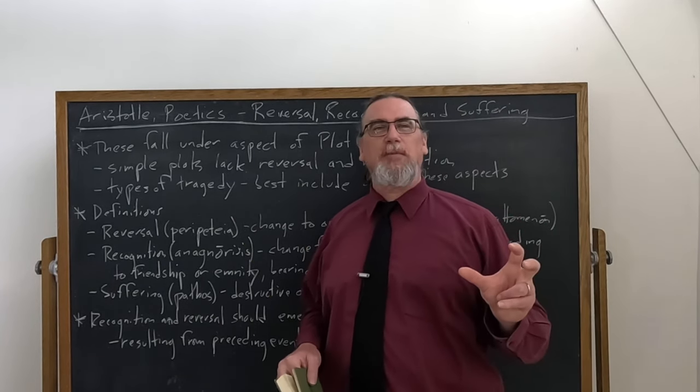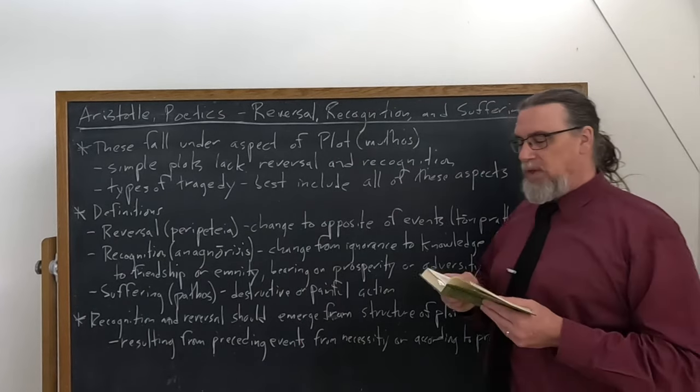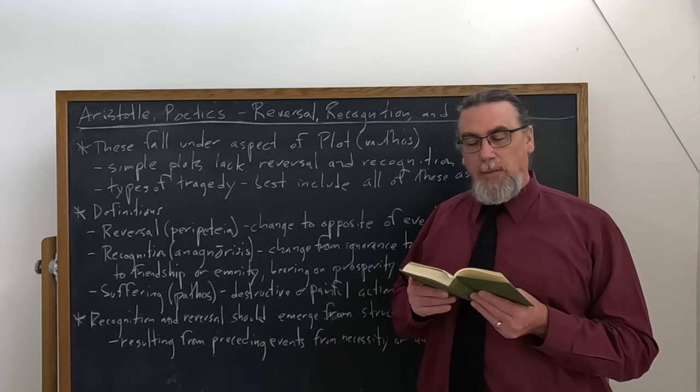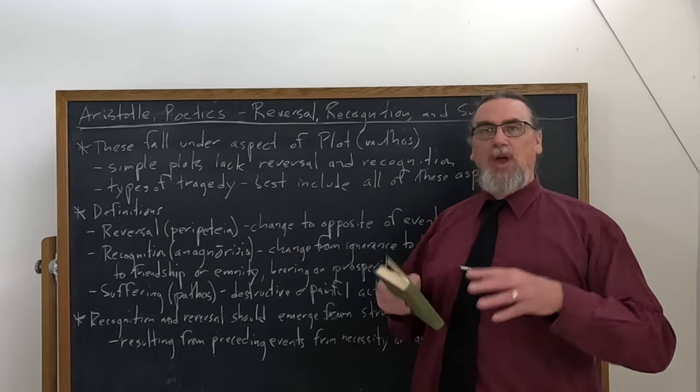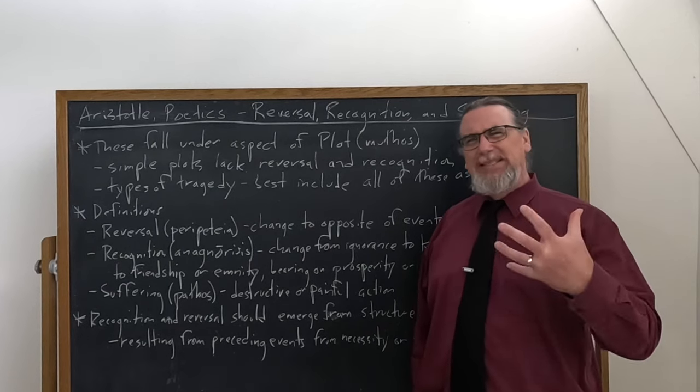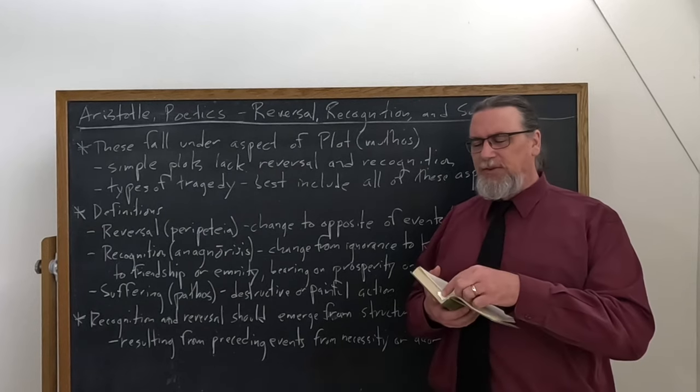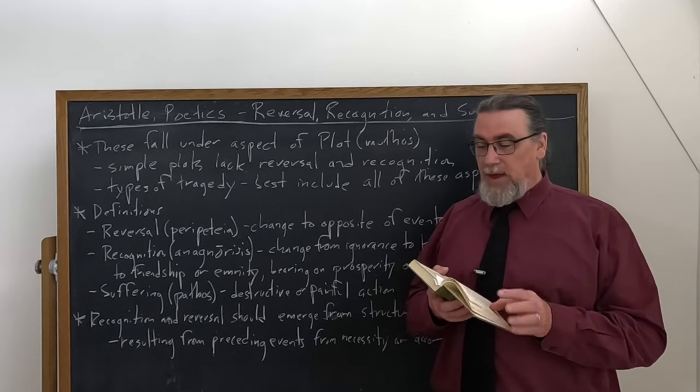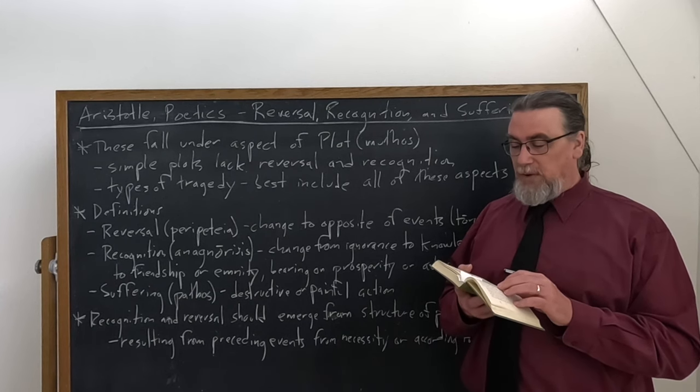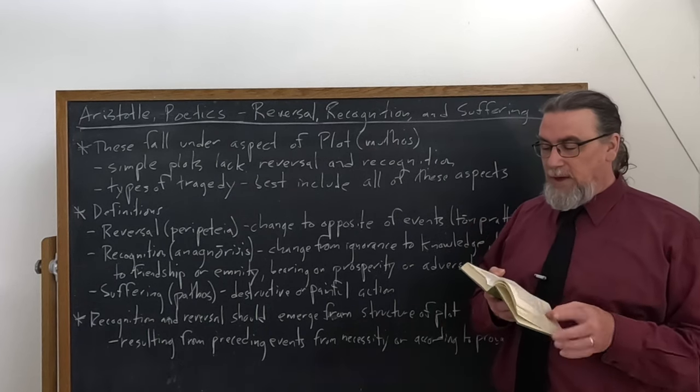Or, he doesn't say out of probability, but in accordance with probability, and the Greek for that is using a different term, kata to eikos. To eikos is probability. What is likely? What is believable? What makes sense in the circumstances? And he's going to tell us things about this later on.